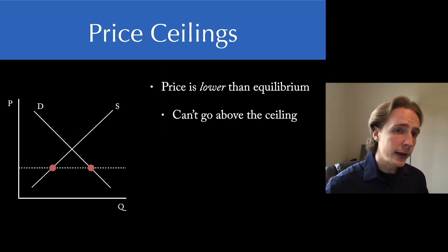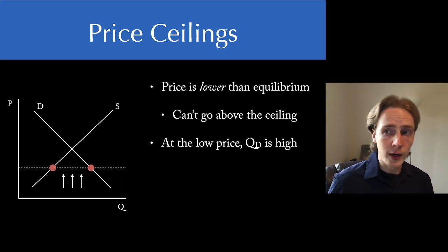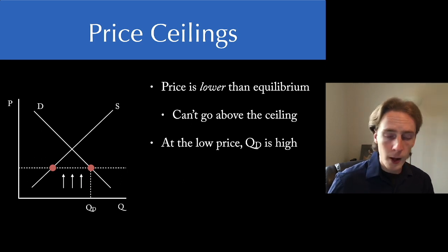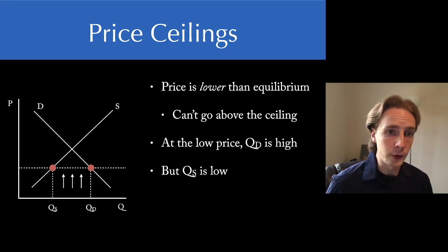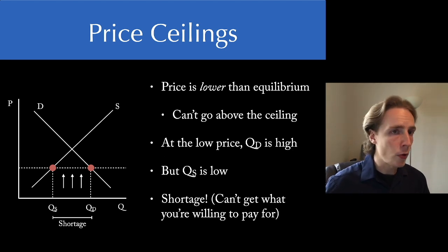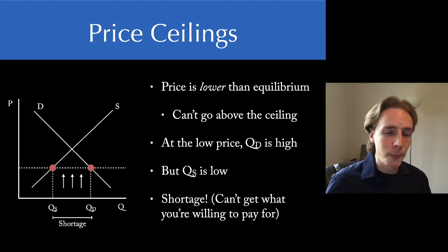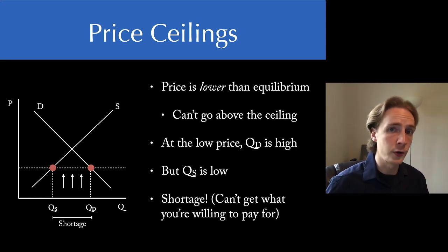Now how about price ceilings? Price ceilings are a situation where the price is mandated to be lower than the equilibrium price — we call it a ceiling because you can't go above it. At this low price, quantity demanded is going to be high — a lot of people are willing to purchase — but quantity supplied is going to be low. This results in what we call a shortage. You might think price ceilings would make the area of the triangles bigger than price floors, but that's not true. Value is created when there's actual trade, and if there are more consumers than producers, it's whichever one is lower that determines how many transactions occur. Anything that reduces either quantity supplied or quantity demanded is going to reduce the number of transactions.